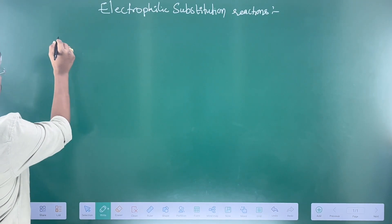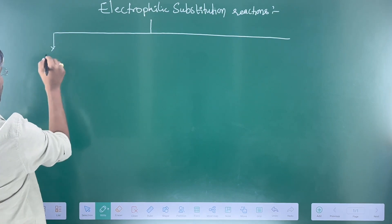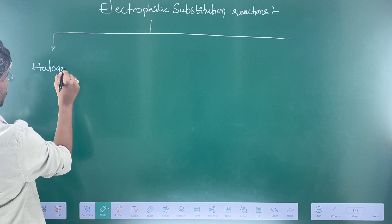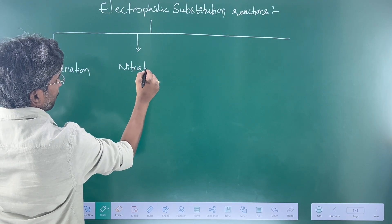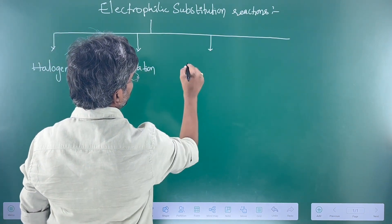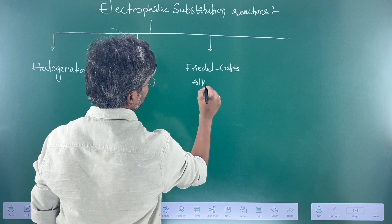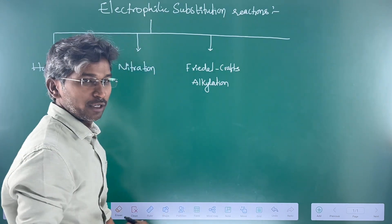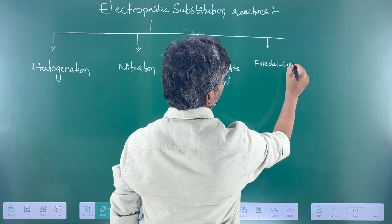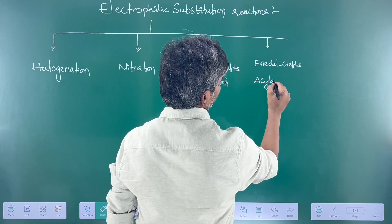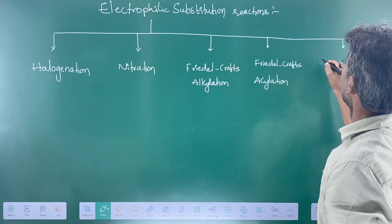Electrophilic substitution reactions are mainly classified into five types. First: halogenation. Second: nitration. Third: Friedel-Crafts alkylation. Fourth: Friedel-Crafts acylation — these two reactions are most important. And the last one: sulfonation.